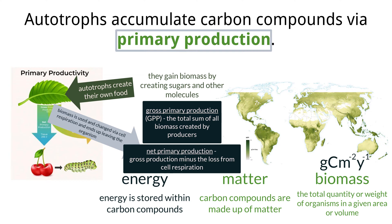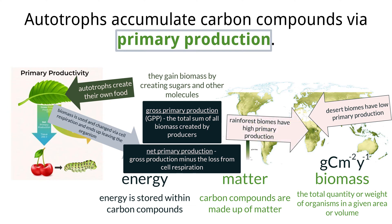Autotrophs tend to have different primary production levels based on the biome they are in. Some biomes like deserts have low primary production rates because the required resources for photosynthesis are minimal. Other biomes like a tropical rainforest have abundant resources to support photosynthesis, so plants can produce a large amount of biomass per year.